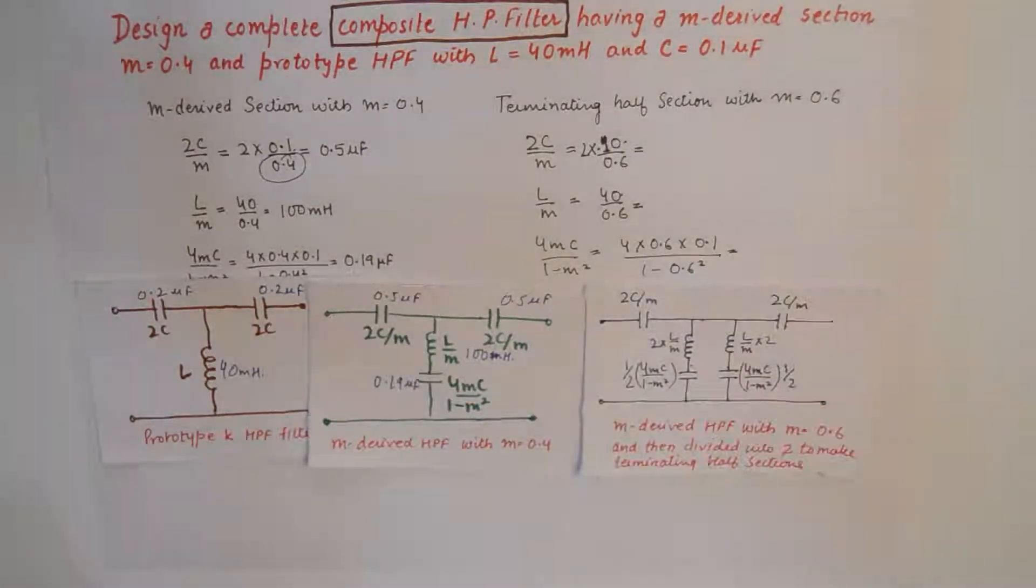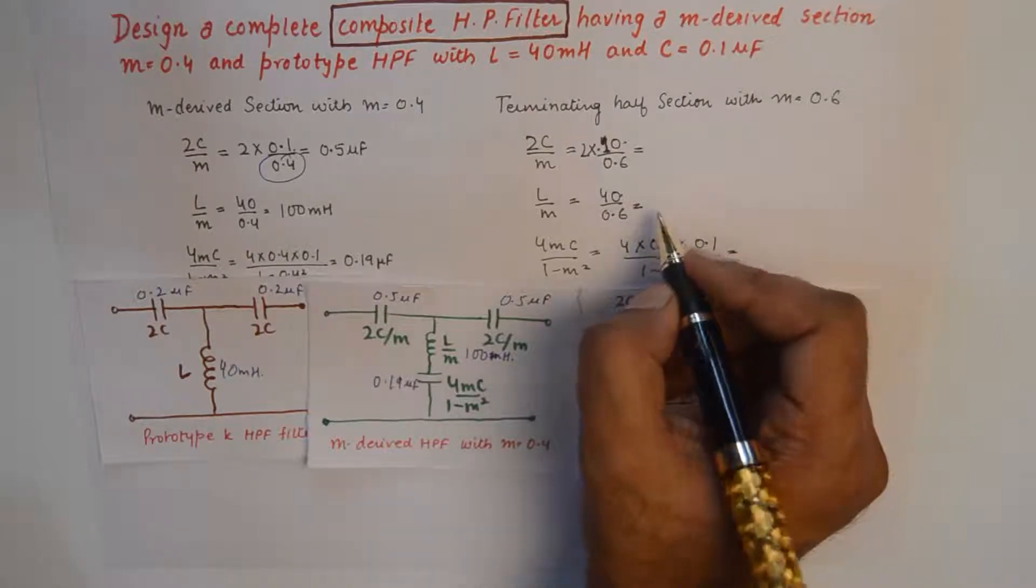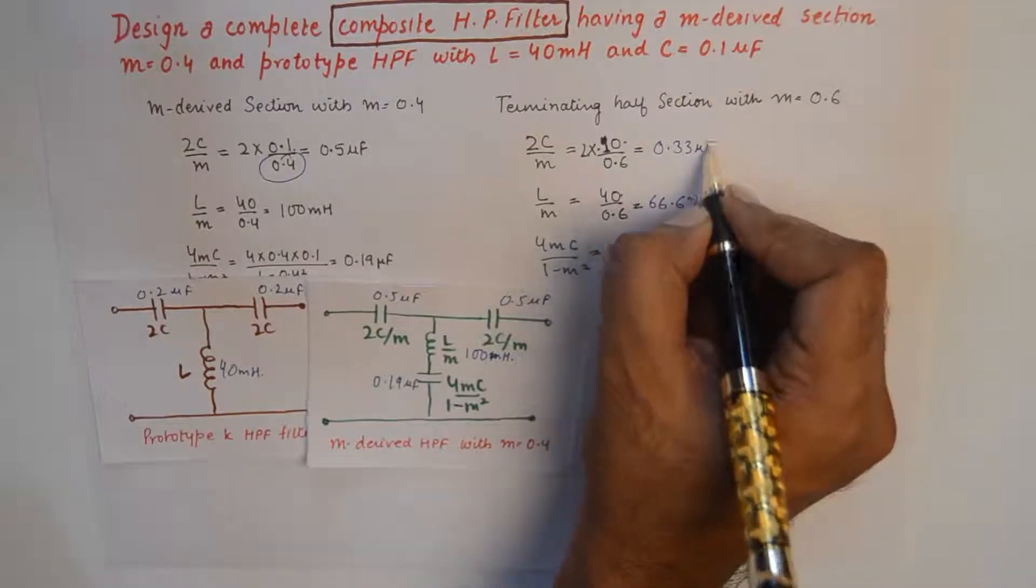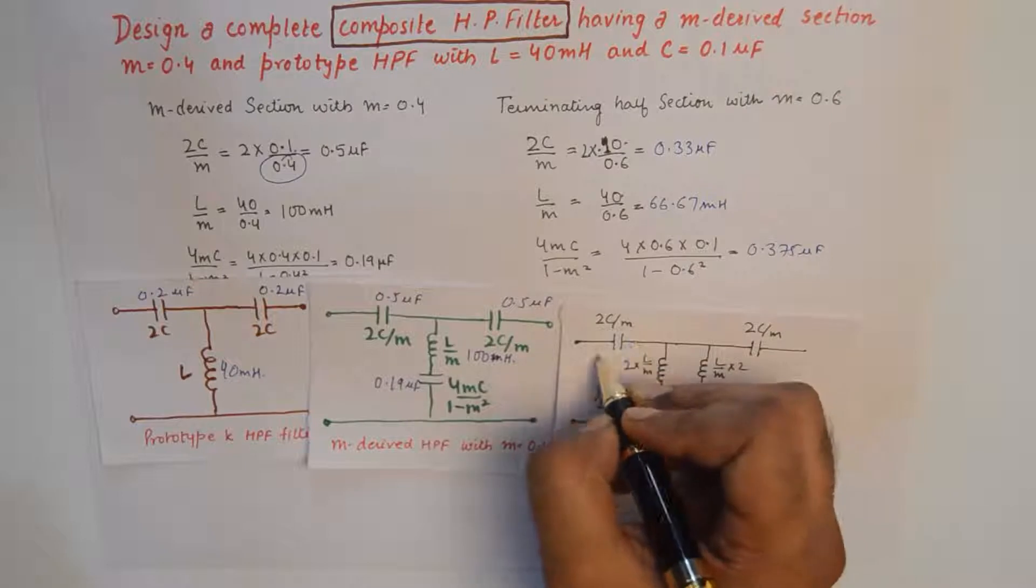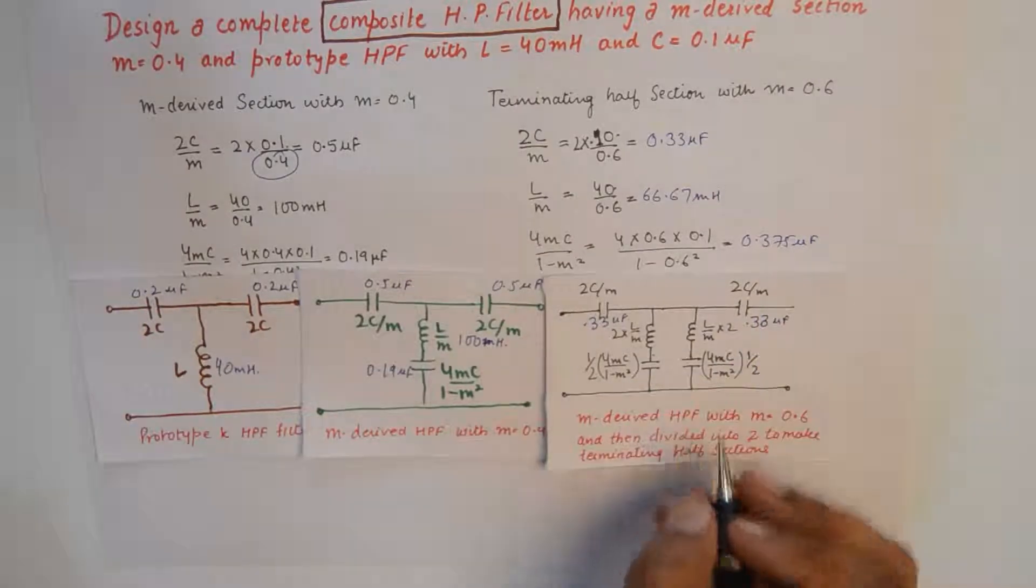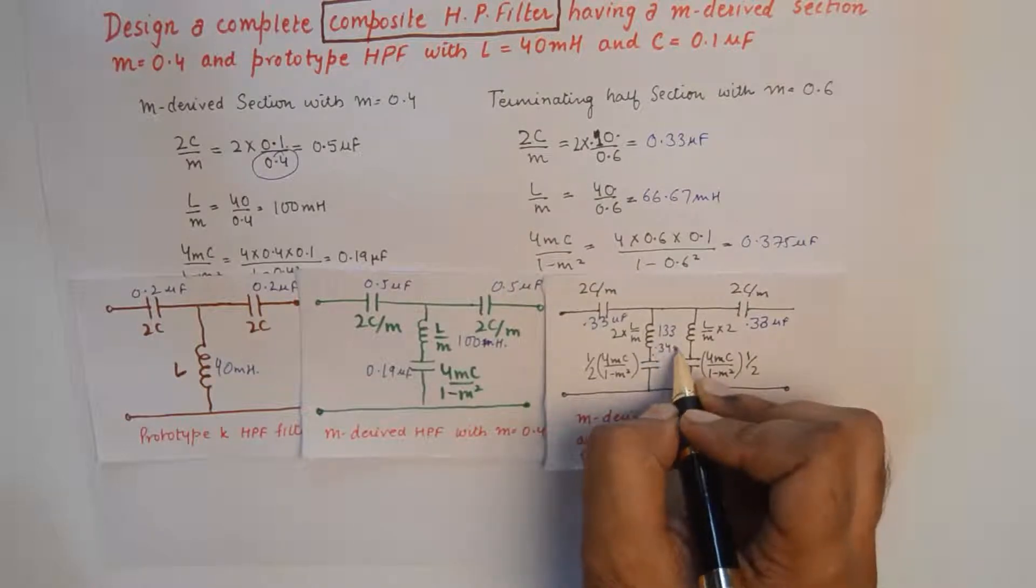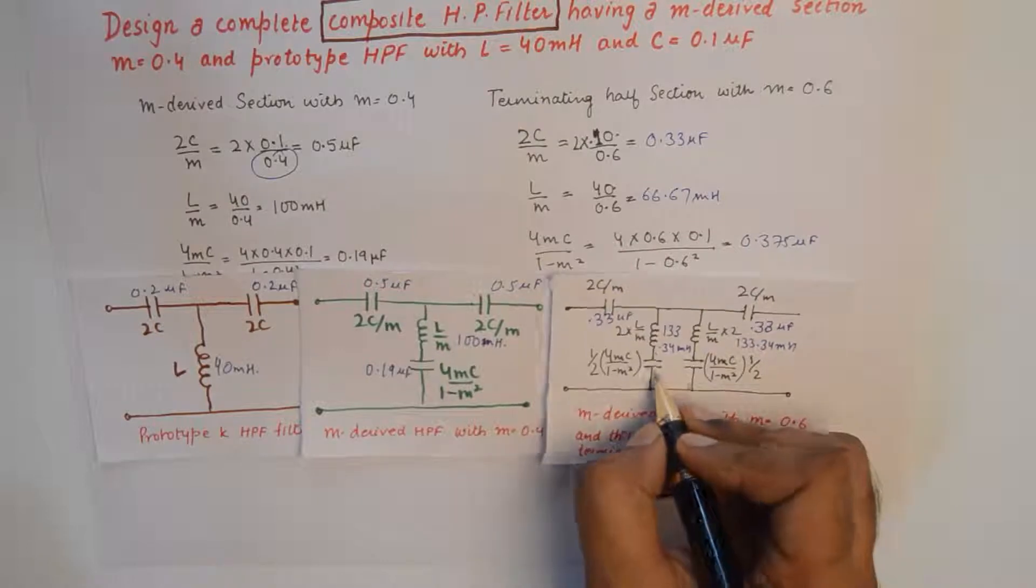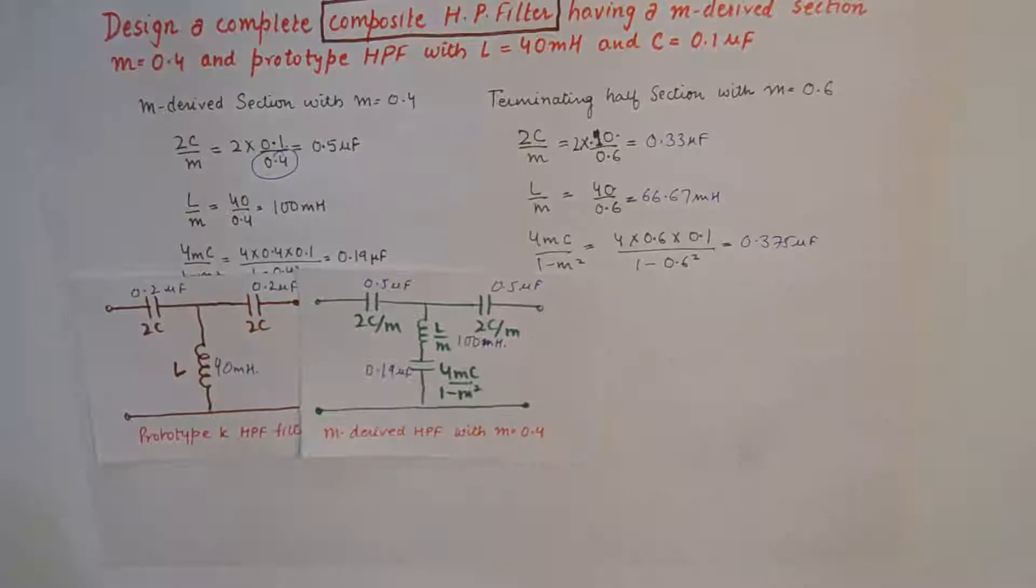Let's find out the values here. L by M is 40 millihenry upon 0.6 this time around, so this will become 66.67 millihenry. This will be 0.33 microfarad, and this is 0.375 microfarad. So this gets a value of 0.33 microfarad, this gets 0.33 microfarad. Twice of L by M will be 133.34 millihenry, and this value of capacitance is 0.375 microfarad again.